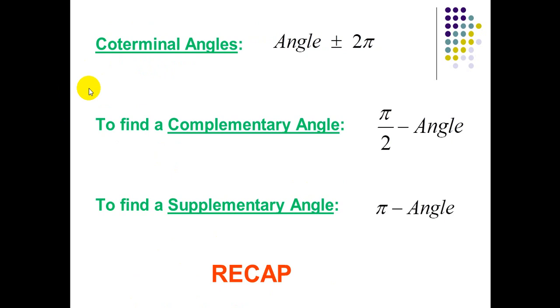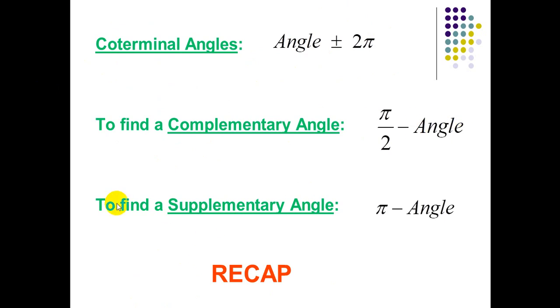Summary: coterminal angle is the angle plus or minus 2π. Complementary angle is π/2 minus the angle. Supplementary angle is π minus the angle.